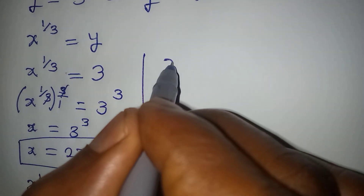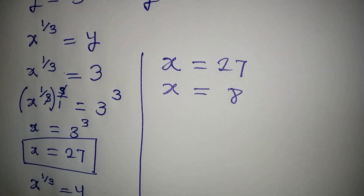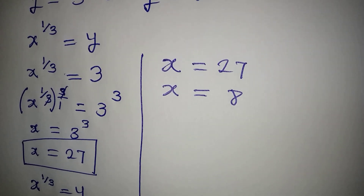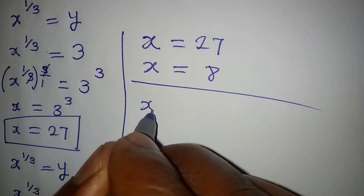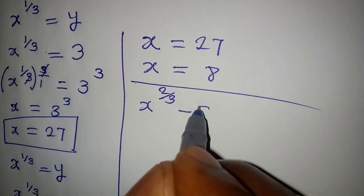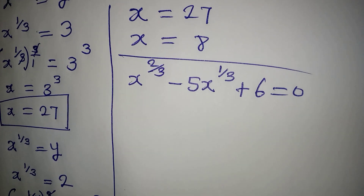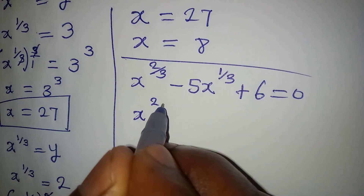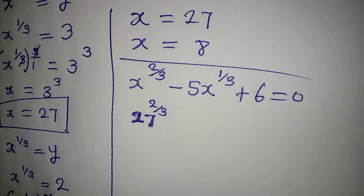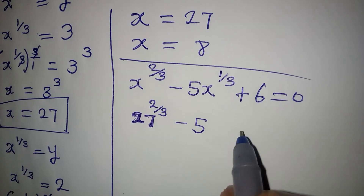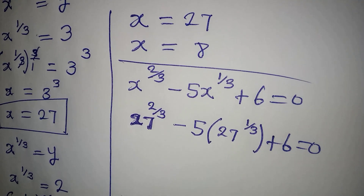So we have x equals 27 and x equals 8 as our two solutions. Let's check whether these two values satisfy the original equation: x to the power of 2 over 3 minus 5x to the power of 1 over 3 plus 6 equals 0. Substituting x equals 27: we have 27 to the power of 2 over 3, minus 5 times 27 to the power of 1 over 3, plus 6.